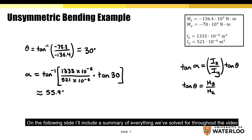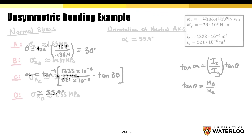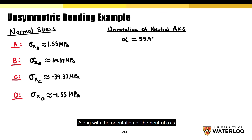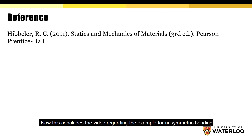Here's a quick summary of the solution, which includes the normal stress for each point along with the orientation of the neutral axis. This concludes the video regarding the example for unsymmetric bending. In the following video, we'll be discussing Combined Loading.